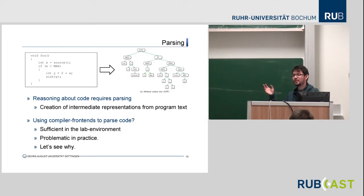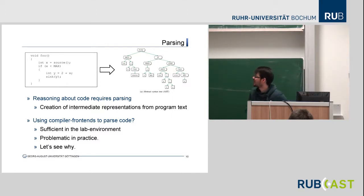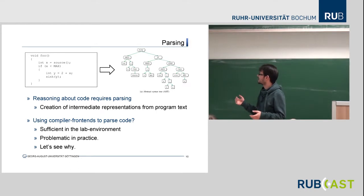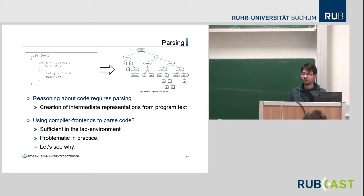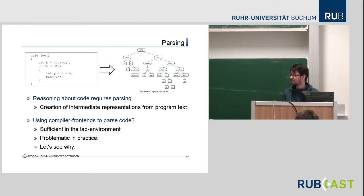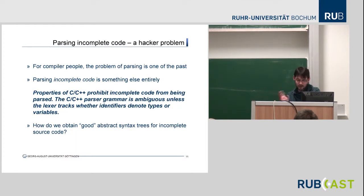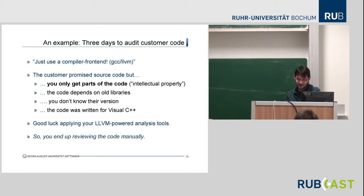Before we can do any of this, we need to parse code. That sounds very trivial, but in fact it's not. When I started doing this, many people said parsing code is a topic completely covered in compiler design — why not use a compiler frontend? This is actually sufficient in a lab environment, but it turns out it's really problematic in practice. The problem is that the code we usually have is incomplete. For C and C++, if the code is incomplete, you can't parse it because the grammar is ambiguous.